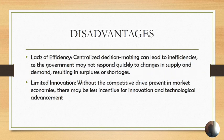Moving to disadvantages — there is a lack of efficiency. In the command system there is allocative inefficiency, productive inefficiency, and x-inefficiency. Centrally made decisions can lead to inefficiencies as the government may not respond quickly to changes in supply and demand, resulting in surpluses or shortages. The system is characterized by severe shortages because the government may not know what people want over a given time period.